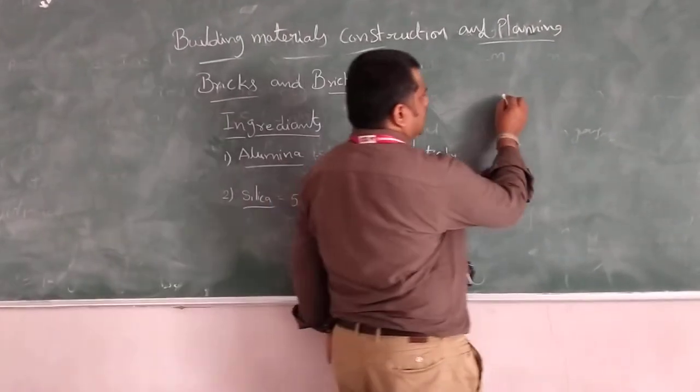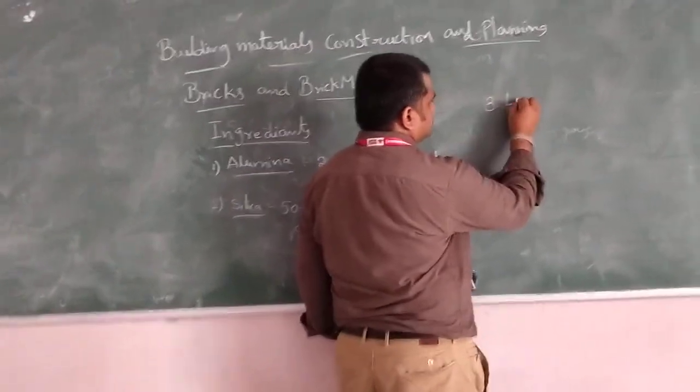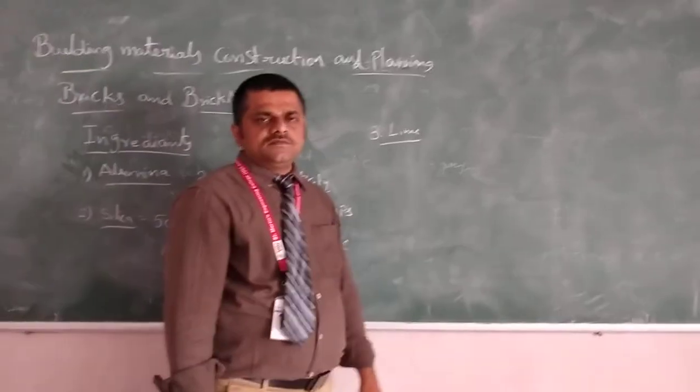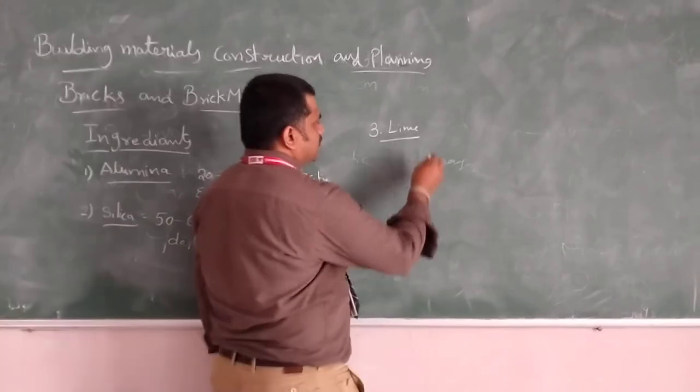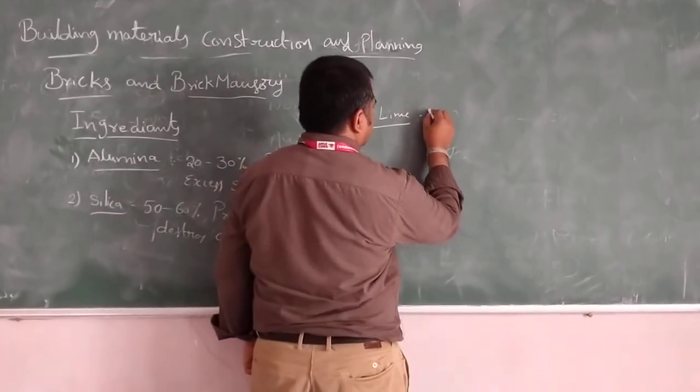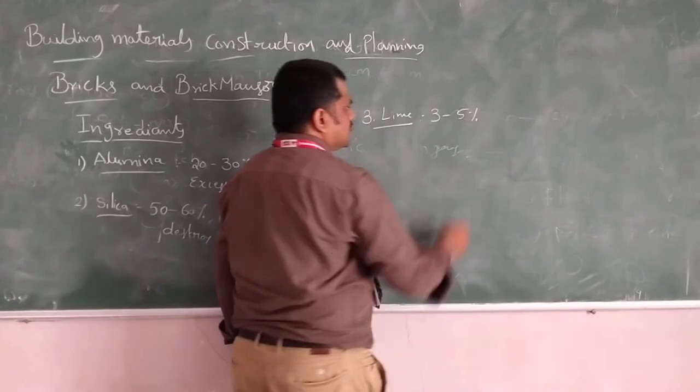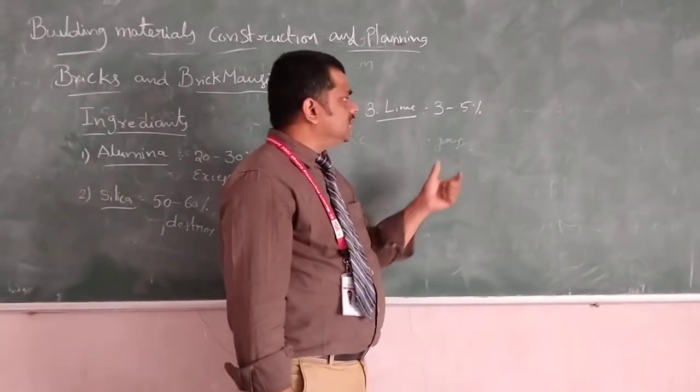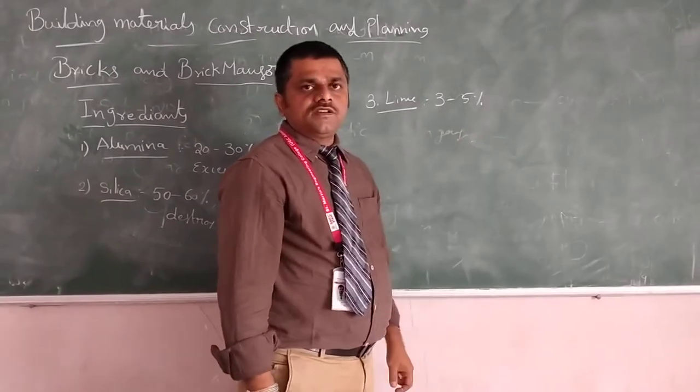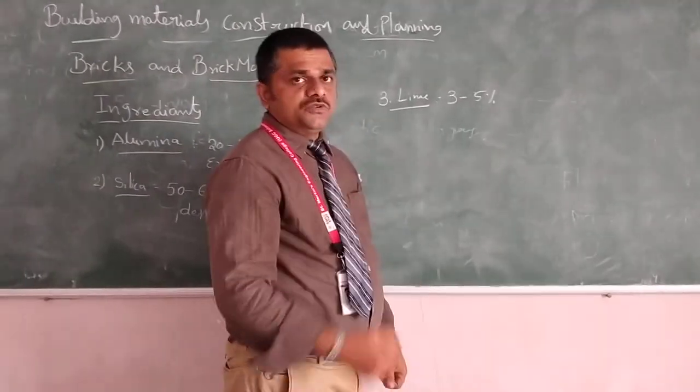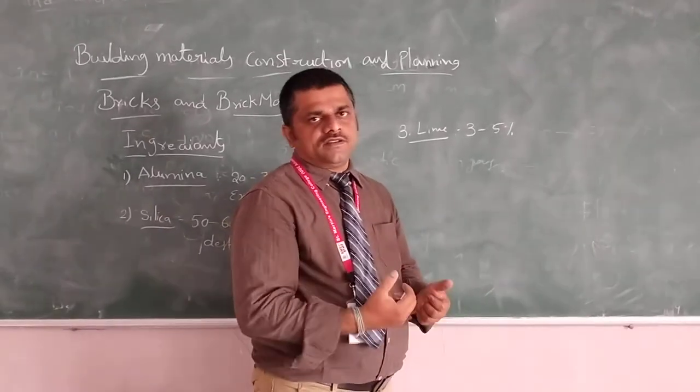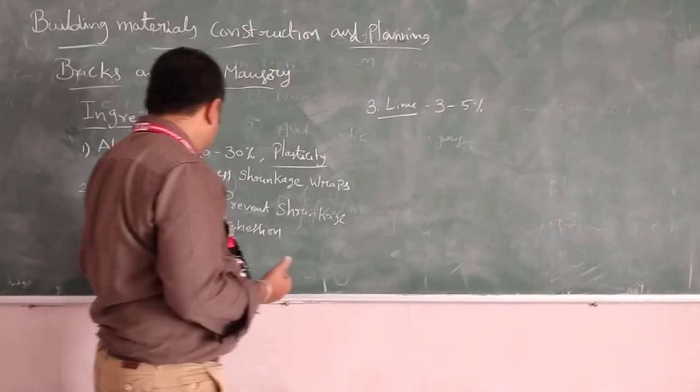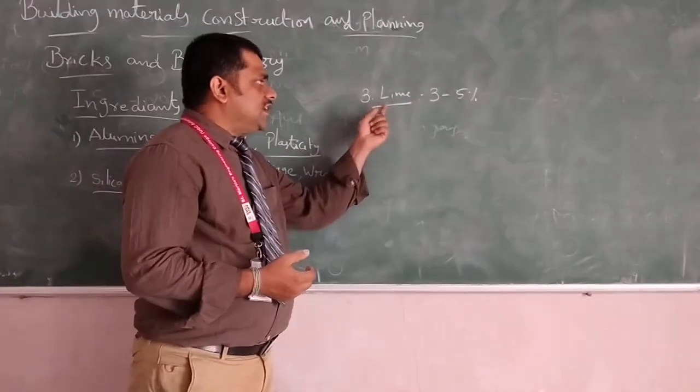Third one is lime. The percentage of lime is very normal. The lime percentage is 3 to 5 at the weight of the brick. What is the duty of this? It prevents the shrinkage, just like the silica.